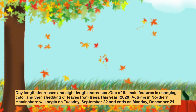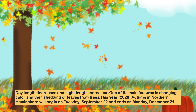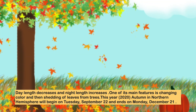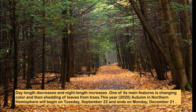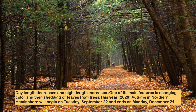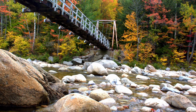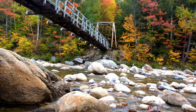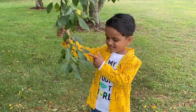One of its main features is the changing color and then shedding of leaves from trees. This year, autumn in the Northern Hemisphere will begin on Tuesday, September 22nd, and ends on Monday, December 21st.